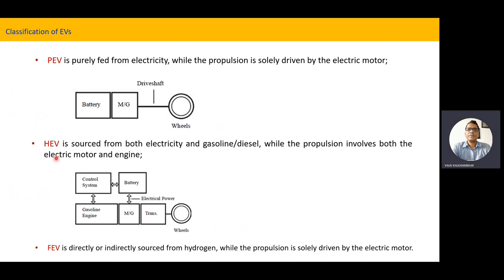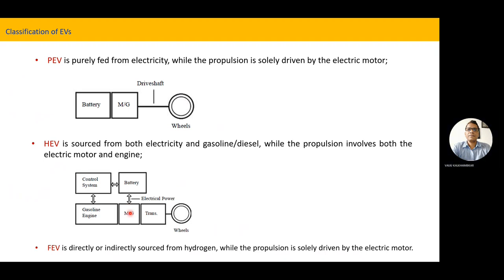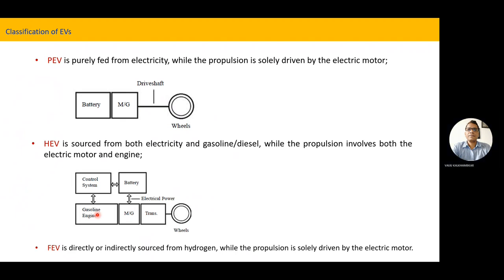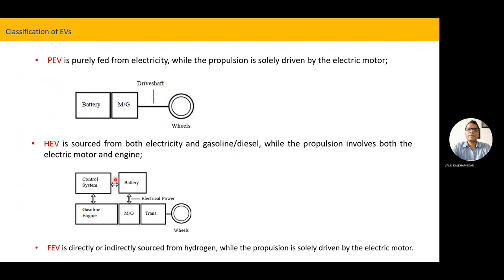Another configuration is a hybrid vehicle. In this, we can see there are two systems: one is the IC engine and another is the battery, and there will be a motor. Both systems will support the drive train. Now, how they are connected — either these two systems are connected in series or they are connected in parallel — gives different types. So these are the types of hybrid electrical vehicles. This is a brief introduction about hybrid electrical vehicle configuration.